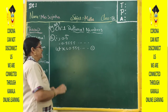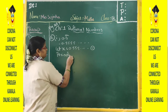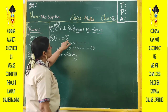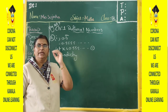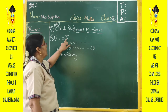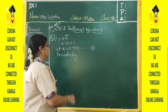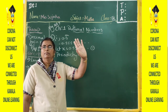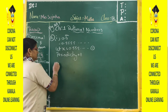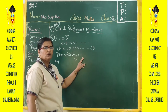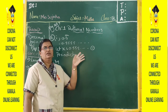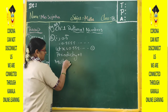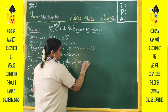Now, what is the periodicity? The periodicity is how many numbers have a bar. Here the bar is on 5 only — one number — so periodicity equals 1. If periodicity is 1, multiply both sides by 10. If periodicity is 2, multiply by 100. If periodicity is 3, multiply by 1000. Here periodicity is 1, so multiply both sides by 10.